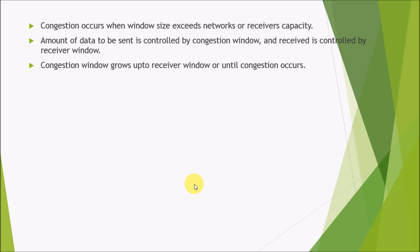The amount of data to be sent is controlled by the congestion window. The congestion window is present at the sender side and controls the number of data packets to be sent. At the receiver side, there is a receiver window which receives the data from the network. The congestion window starts from MSS, that is maximum segment size, and grows up to the receiver window or until congestion occurs.